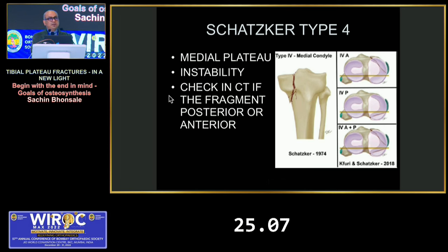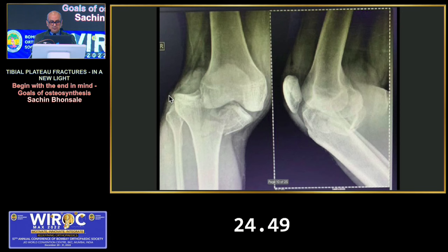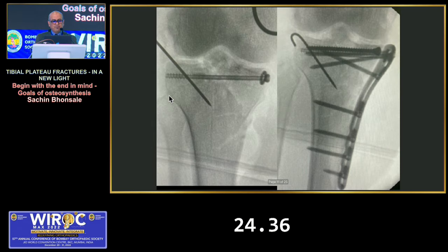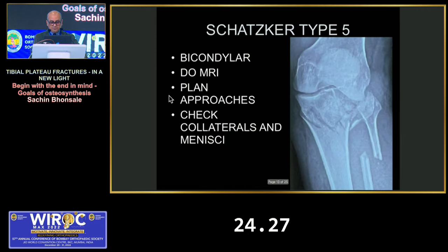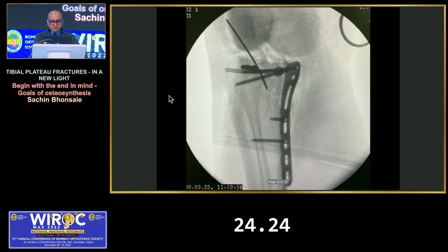A type 4 fracture is a medial condyle fracture — never fix it with cancellous screws alone, as there is always associated instability and it will fail. Check whether it is posterior or anterior and fixate with plates. One example of a medial tibial plateau fracture with some lateral extension was an almost dislocated knee managed with a small lateral K-wire fix and a posteromedial plate, which did the job and restored congruity quite well.